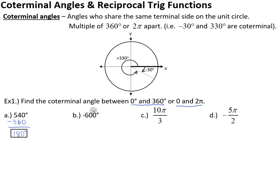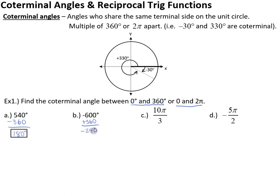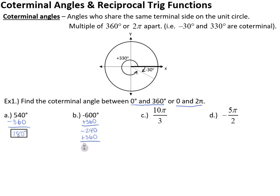For part B, this time we have negative 600 degrees. We are much too low — we're actually below 0. So we're going to start by adding 360, and note that my answer is still negative: negative 240 degrees. We're still not in our range, so we need to go around the circle again and add another 360. Now we are finally at 120 degrees, which does fall in our range. So the co-terminal angle between 0 and 360 that's the same as negative 600 degrees is 120.